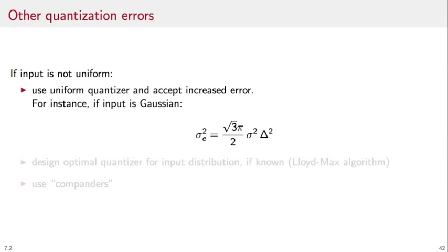If the input is not uniform, we can still use a uniform quantizer and accept an error penalty. For instance, if the input is Gaussian, it can be shown that the mean square error has this form. It depends now on the variance of the input, but even for input signals with unit variance, it would be larger than delta over 12.